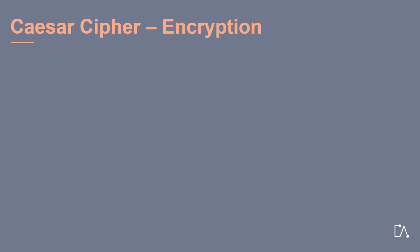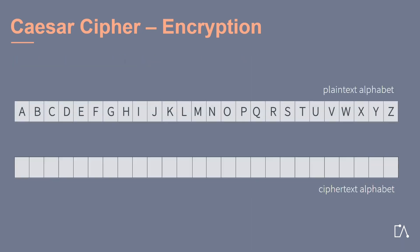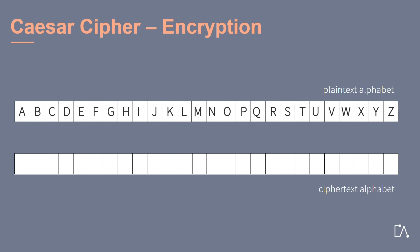In this method, plaintext characters are substituted by ciphertext characters. This means that we take the plaintext alphabet and encrypt each letter by a different letter. So we first have a look at our plaintext alphabet and our future ciphertext alphabet. By the Caesar cipher, we substitute our letters with the letter three spaces to the right, and hence we often also speak of shifting the letters in this context.